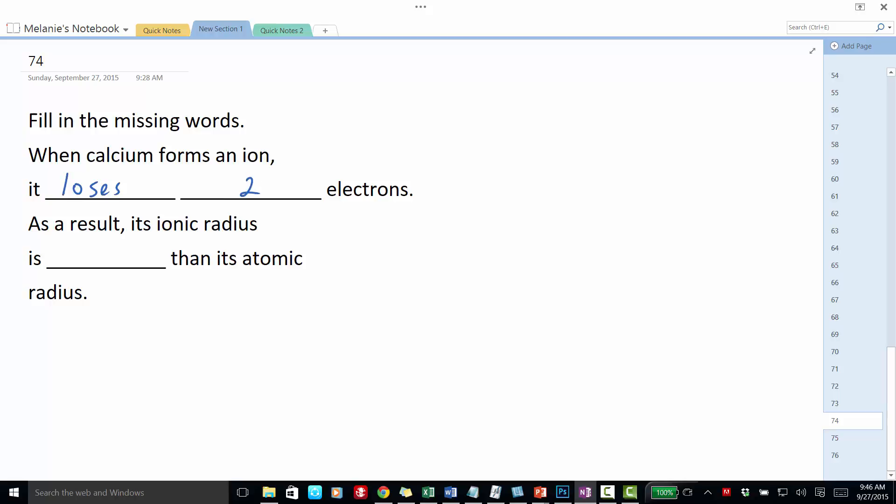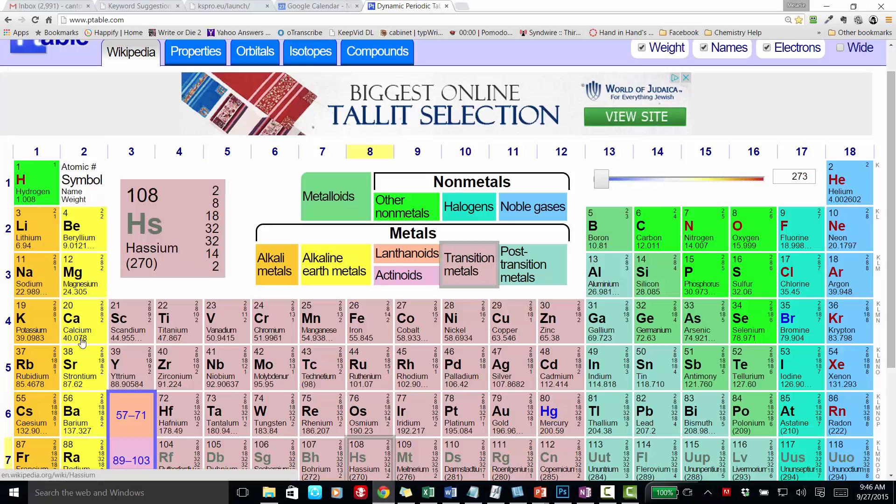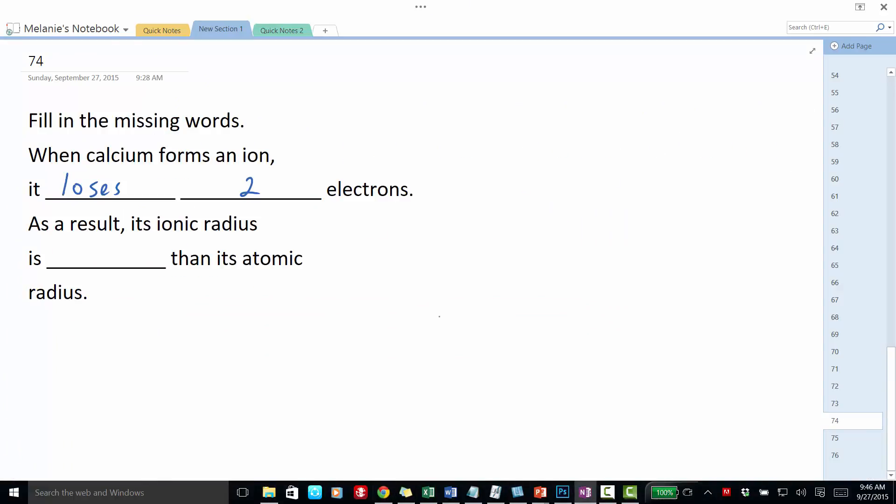As a result, its ionic radius is what compared to its atomic radius? Let's go back to calcium. Calcium has 20 electrons and 20 protons.